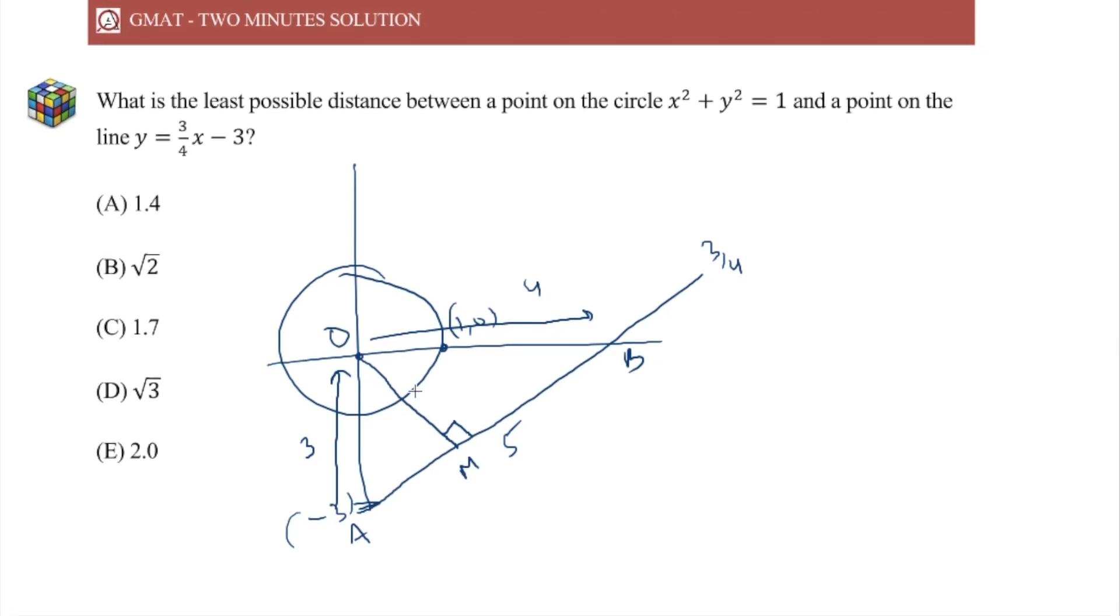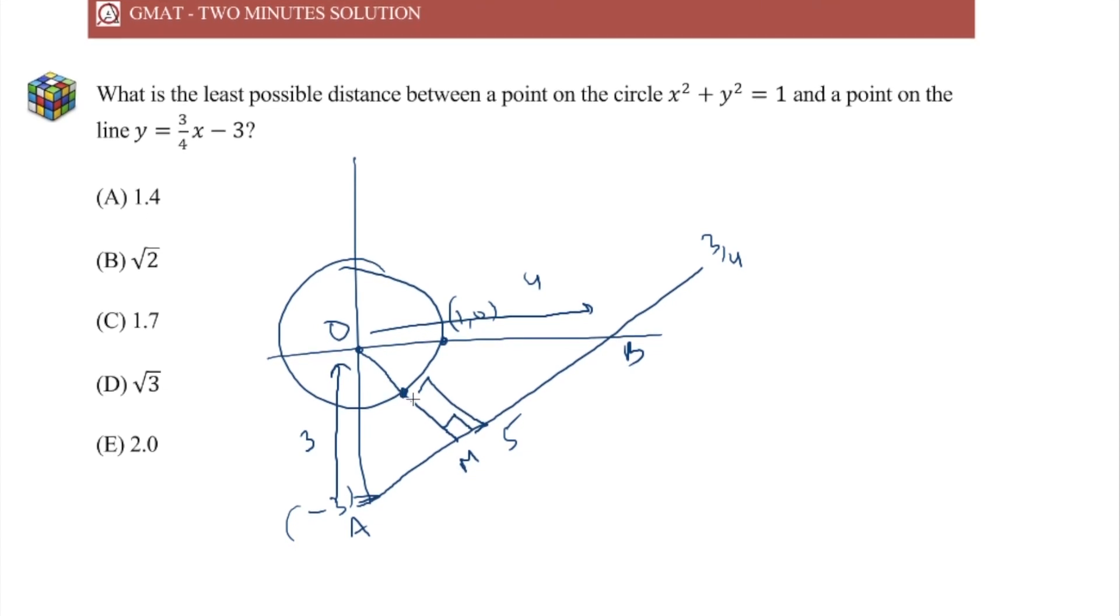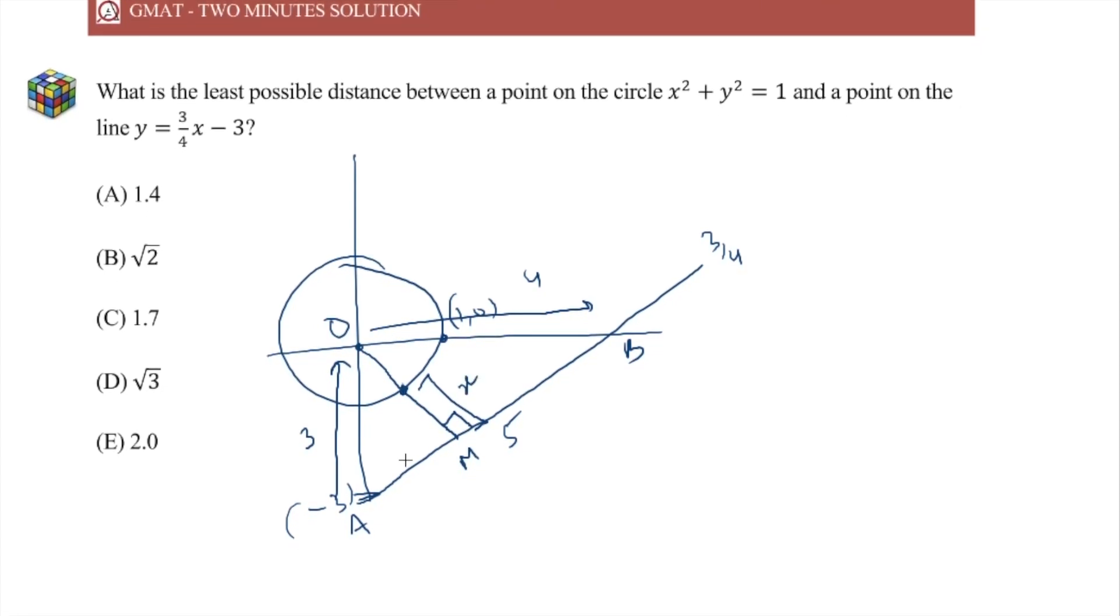From O to AB, now this also gives us the least possible distance from here to M, from a point on the circle to M, let's call this x. Why?